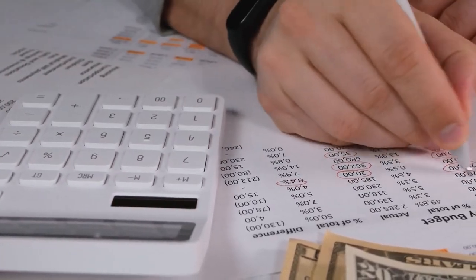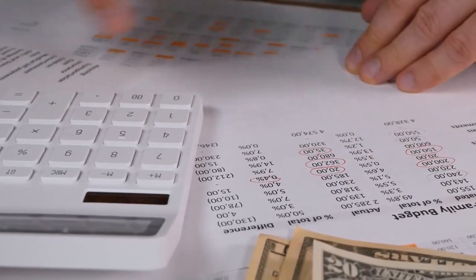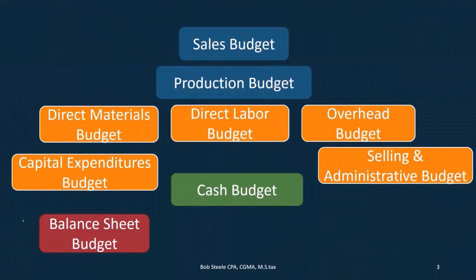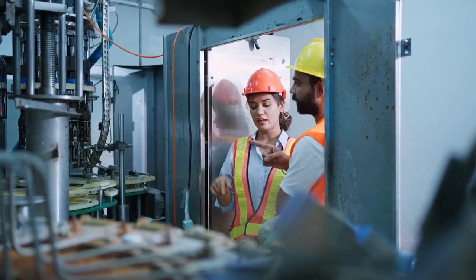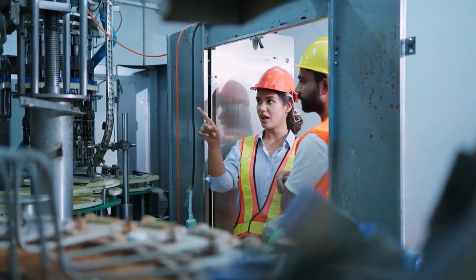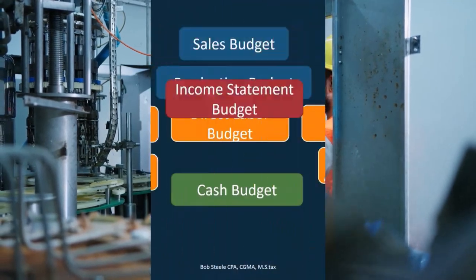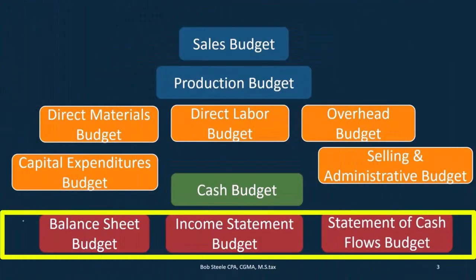In order to create the balance sheet, we need the cost of goods sold. And in order to have the cost of goods sold for a manufacturing company, we're going to work on the cost of goods manufactured. Then moving on to the balance sheet, income statement, and statement of cash flows, which are the statements that can be done after that point in time.